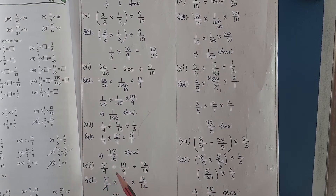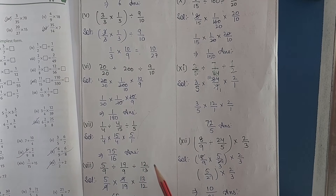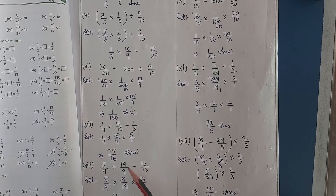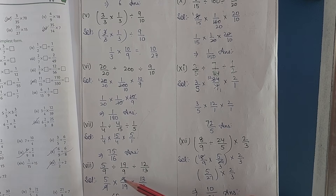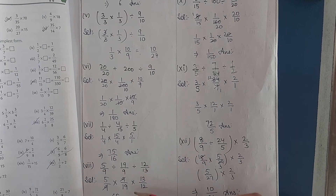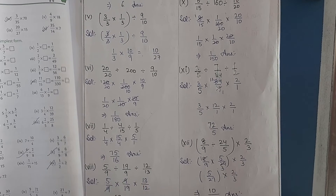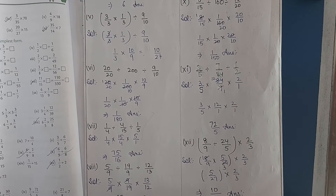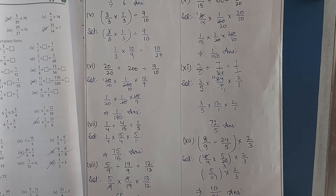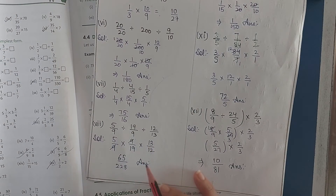In our next question: 5/9 divided by 19/9, divided by 12/13. Simply converting division into multiplication and taking the reciprocal of the next term: 19/9 becomes 9/19. Converting division into multiplication, taking the reciprocal gives 13/12. Simply cancel 9 with 9; 5×13 is 65, 19×12 is 228. So this is our answer.